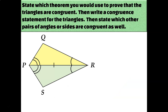Typically when we're doing this kind of problem, we know some things are congruent already. In this diagram, we know that angle QRP is congruent to angle SRP, and that angle QPR is congruent to angle SPR. We also see that PR is congruent to PR. So I could prove that these two triangles are congruent using angle-side-angle — I have a pair of angles, a pair of sides, and another pair of angles, so that's ASA.